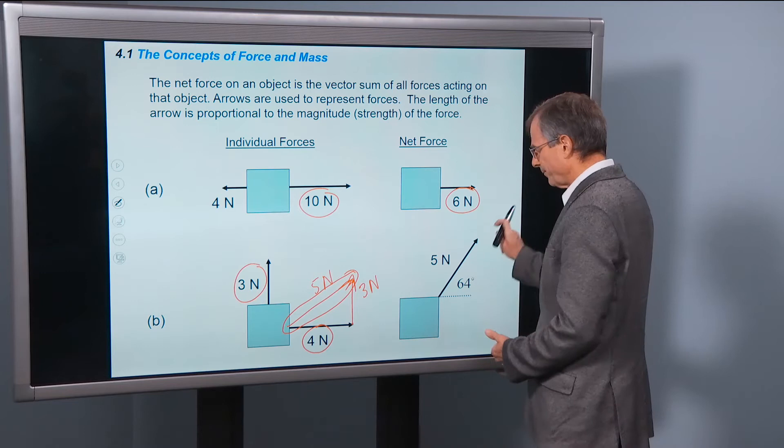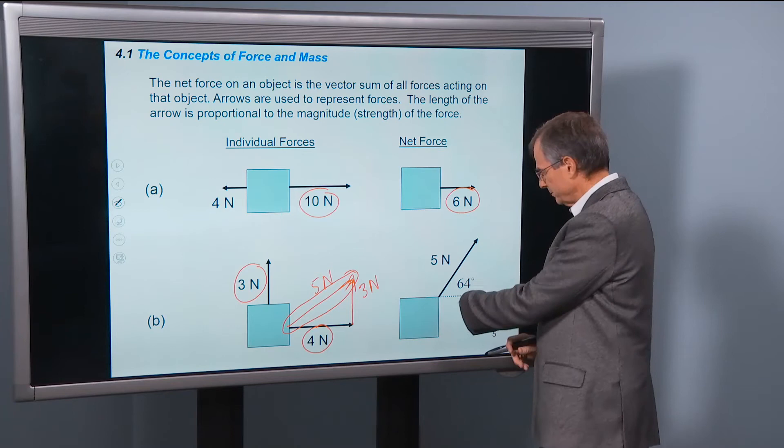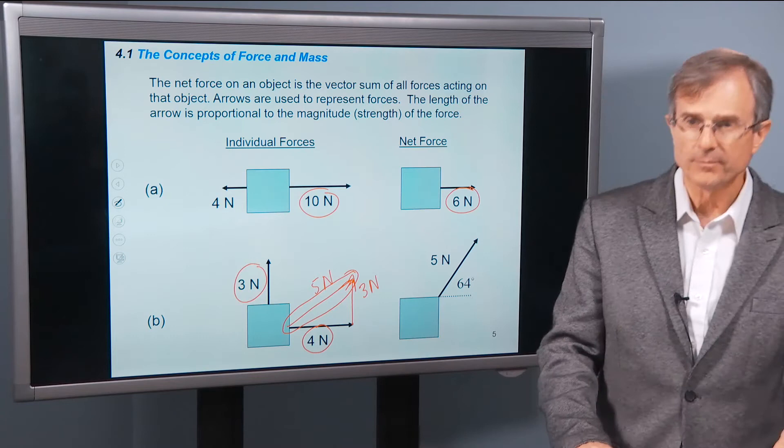So what direction is it in? Well, its magnitude is 5N, and it's directed 64 degrees vertically upward from the direction to the right, or the x-axis.